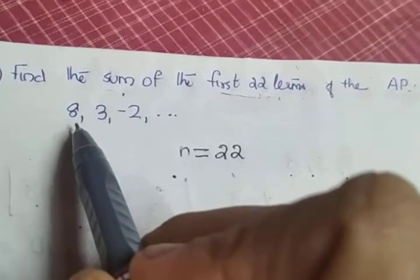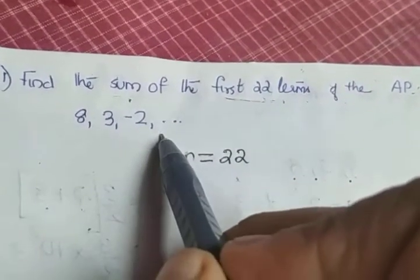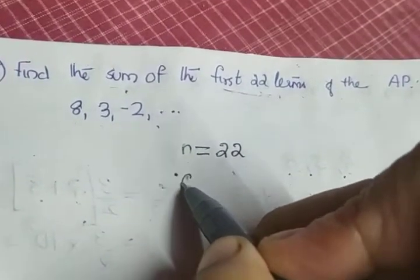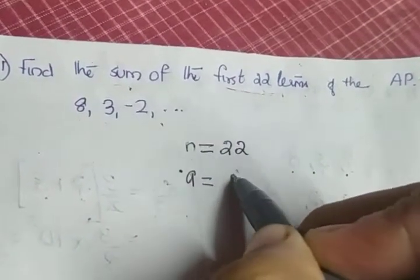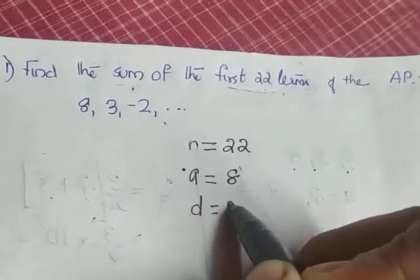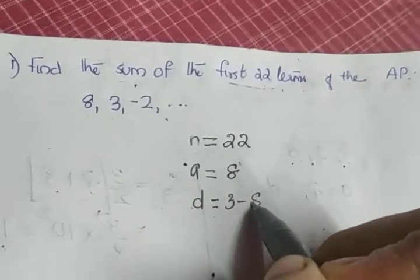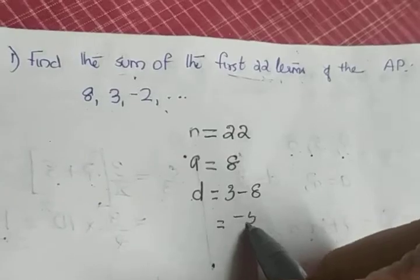Whenever an AP is given, we have to find two values. One is the value of A, the first term, which is 8. And second is the value of D, the common difference, which is second term minus first term: 3 minus 8, which gives you -5.